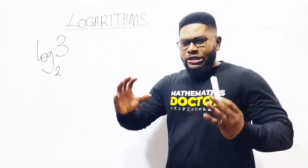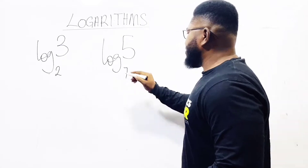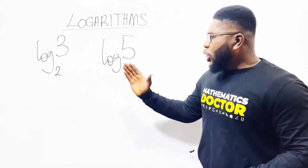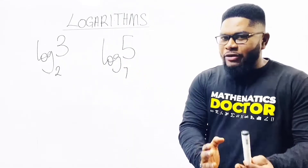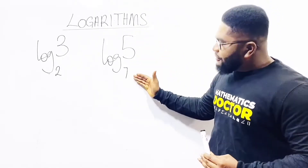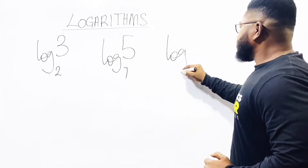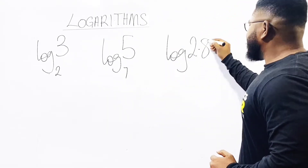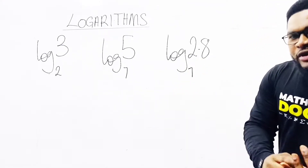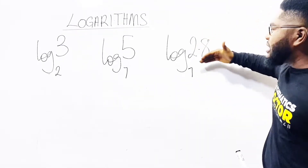Let us take another log number as an example. I have the log of 5 base 7 — I read it as log 5 base 7. The log must be there showing this is a logarithm number. The 5 is the number and it should be bigger than the 7. The 7 is the base, so it is a complete log. Let us take another one: log 2.8 base 7. I brought 2.8 to express that a log's number can be a decimal.